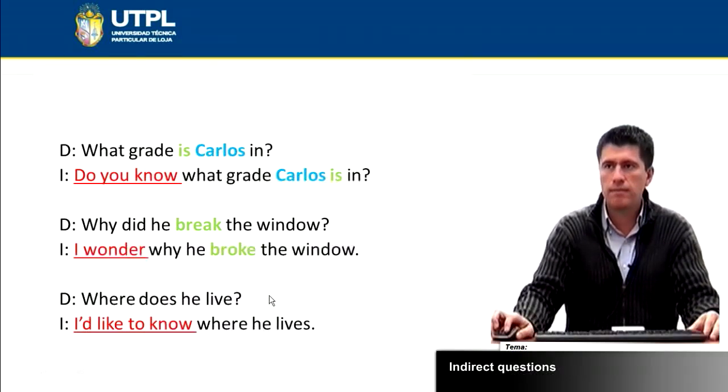Next question: Where does he live? Again, I'm using this introductory clause, I would like to know. We get rid of the auxiliary does. Where he lives. I would like to know where he lives. We're using S with the verb because we're referring to the third person.